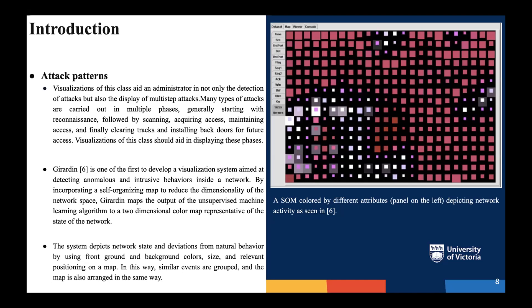By incorporating a self-organizing map (SOM), they are trying to reduce the dimensionality of the network space. They do this by applying an unsupervised machine learning algorithm to a two-dimensional color map representative of the state of the network. The system depicts the network state and deviations from normal behavior by using front and background colors, size, and relevant positioning on a map. In this way, similar events are grouped together, and the map is arranged so that it is easier for analysts to understand what is going on in the network.